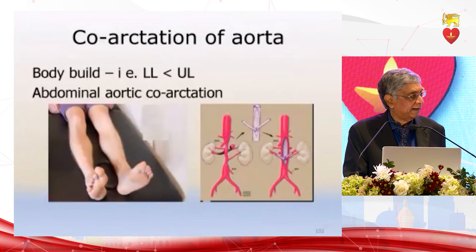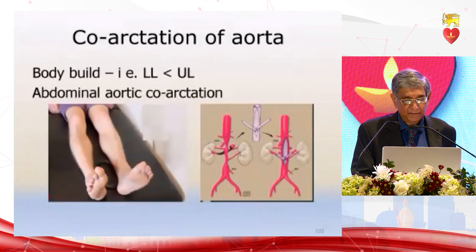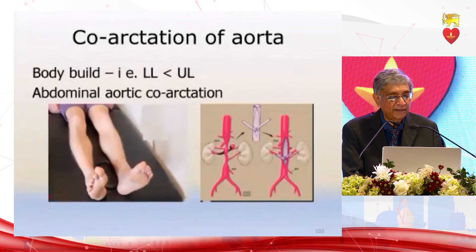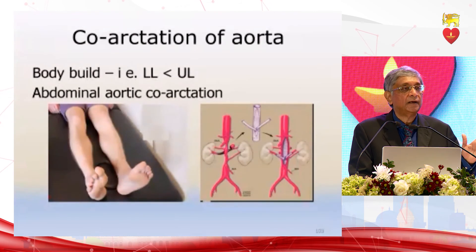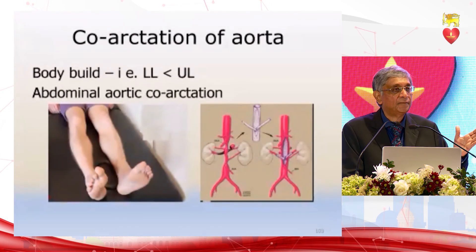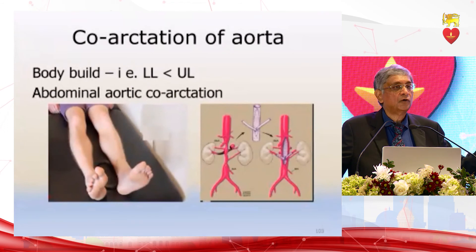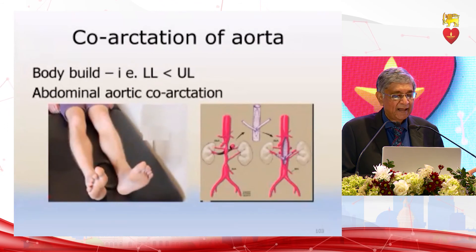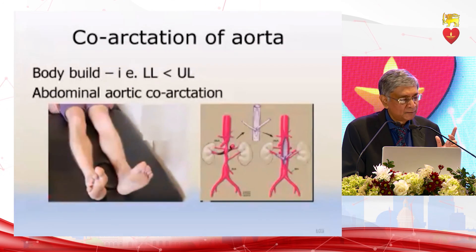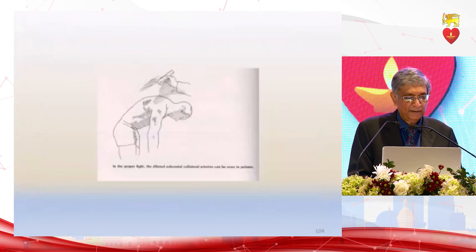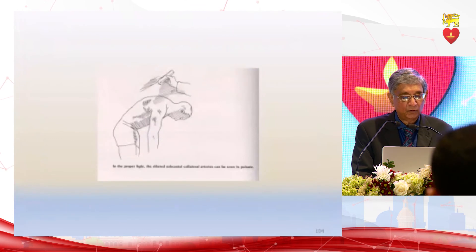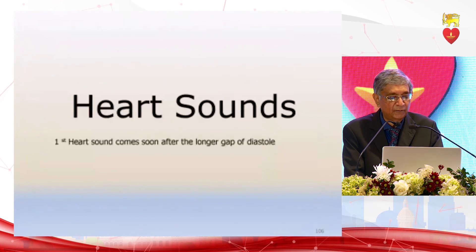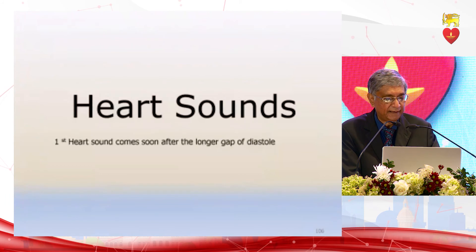Coarctation of the aorta: look at the body build — the upper torso is well built while the lower torso is thin, which should raise suspicion. Look for interscapular pulsations and perform selective auscultation.